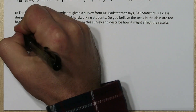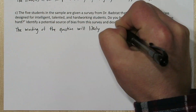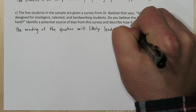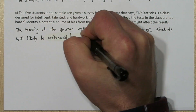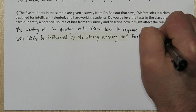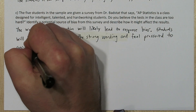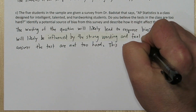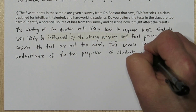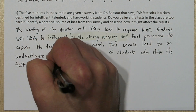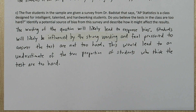The wording of this question will likely lead to response bias. Students will likely be influenced by the strong words like 'intelligent,' 'talented,' and 'hardworking,' and they're going to feel pressured to answer that the test is not too hard so they can feel like they're part of that group. This would lead to an underestimate of the true proportion of students who feel the tests are too hard.